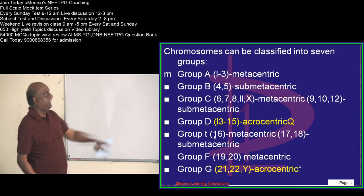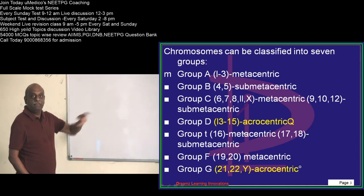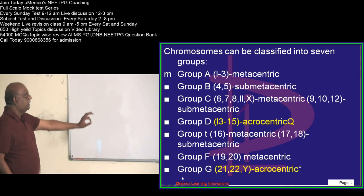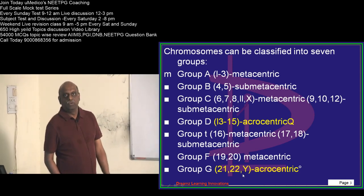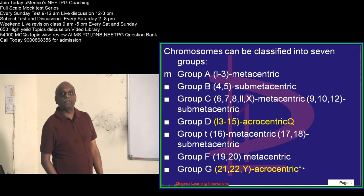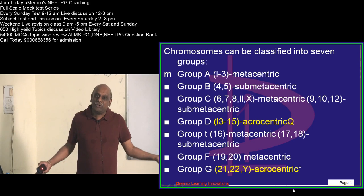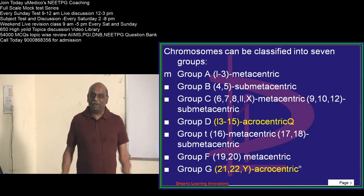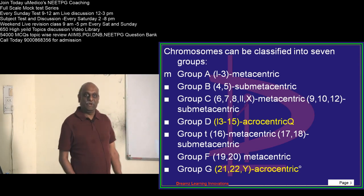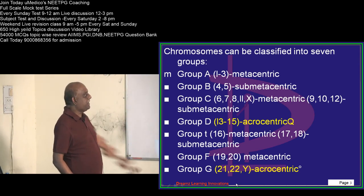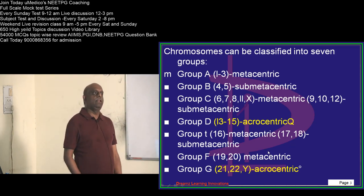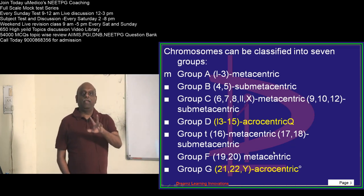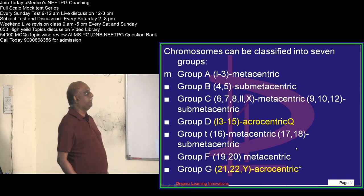Typically, Group D comprises chromosomes 13–15 and is acrocentric. Group G has chromosomes 21–22, which are also acrocentric. That is all about Robertsonian translocation in Down syndrome — two acrocentric chromosomes will undergo a fusion leading to the development of Down syndrome.